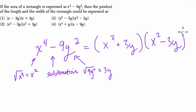And if we do the multiplication here, we can check that this does work. x squared times x squared is x to the 4th, and x squared times negative 3y is minus 3x squared y.